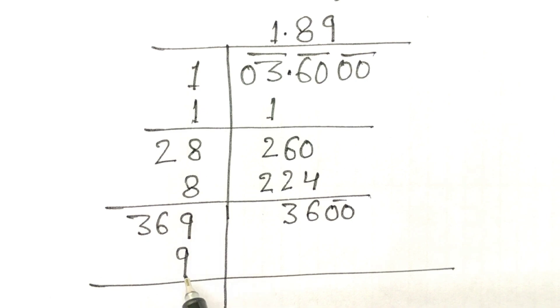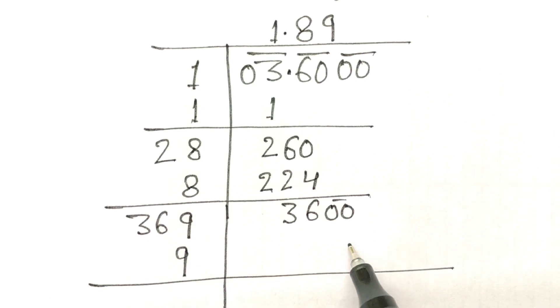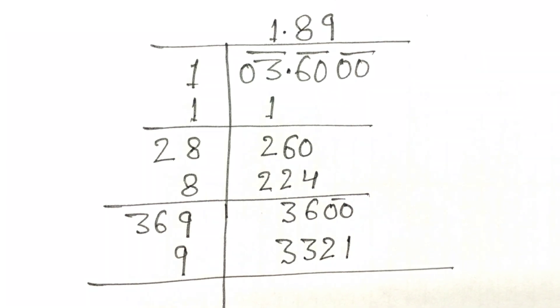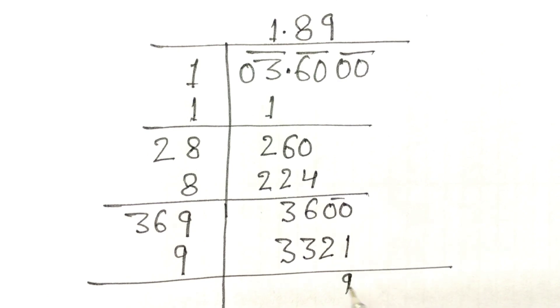Now, 369 multiplied by 9. So we get 1, 2, 3, 3. This minus this here, 9, 7, 2. Okay.